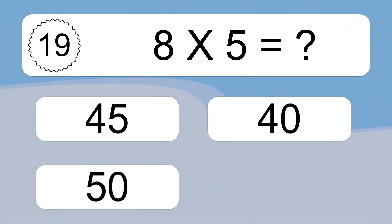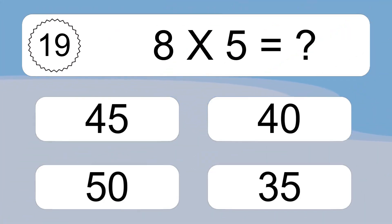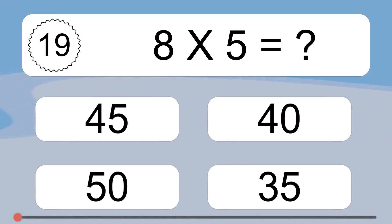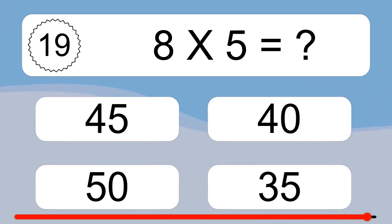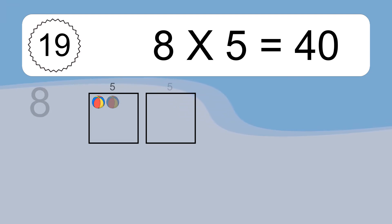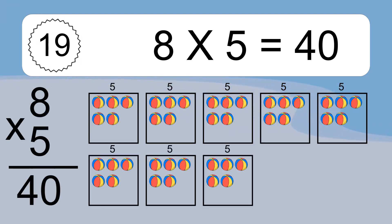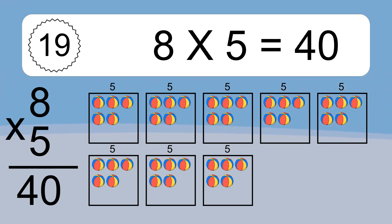8 times 5 equals what? 8 times 5 equals 40. We have 8 boxes, and each box has 5 colorful balls inside. If you count all the balls in all the boxes together, you will have 8 times 5 balls. This equals 40 balls.